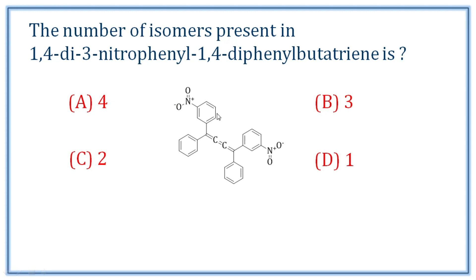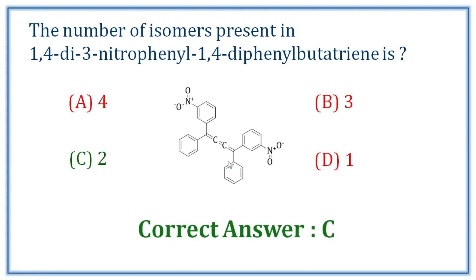Assuming stereo isomers are intended: in the compound, two or three double bonds are required to show geometrical isomerism (cis-trans). There is the possibility of one cis and one trans isomer, giving a limited number of stereo isomers.